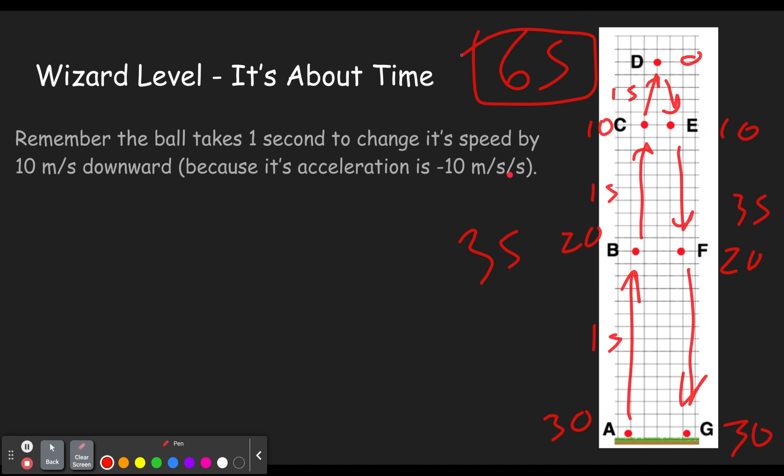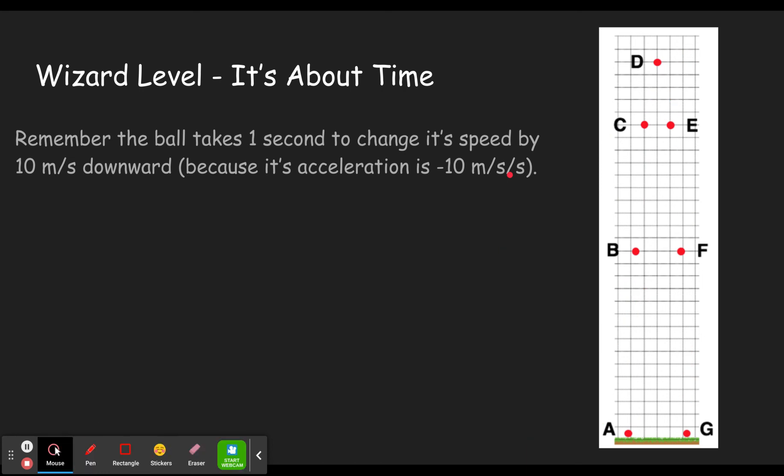And that's one of the types of problems you'll have to do. Of course, your starting speed might be a little bit different, which just means you have more seconds on the way up, one second to slow it down 10 meters per second. So if it started out at 50, it's going to take five seconds to slow it down to zero.